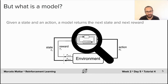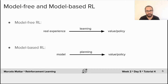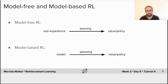The advantage of having a model is that you can use it to mimic or simulate real experience. And if you can simulate experience, you can then learn from those simulations. In model-free reinforcement learning, the agent uses real experience to compute values and ultimately a policy via learning. In model-based reinforcement learning, however, the agent uses simulated experience produced from a model to compute those values. The process of computing values and a policy from simulated experience is what we call planning.